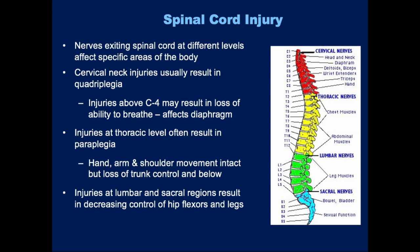The diagram on this slide assigns corresponding injuries with the different portions of the spinal cord and column. Generally, the higher the injury, the more serious the impact. We can break these down by cervical, thoracic, and then lumbar and sacral.